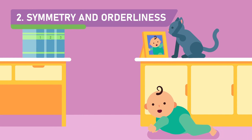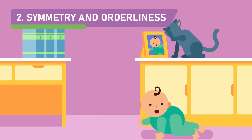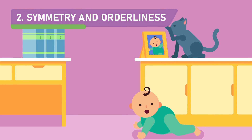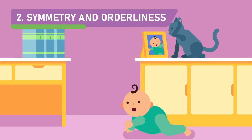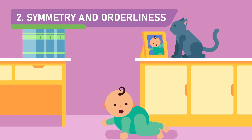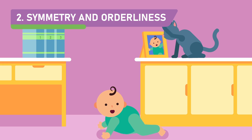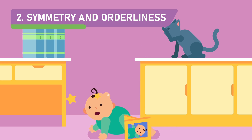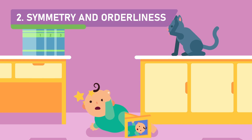The second classification is obsession with symmetry and orderliness. This leads to an excessive fear of oneself or his or her family getting hurt from things that are not in their place.